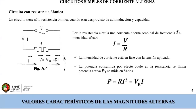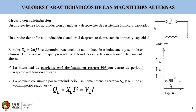Otro circuito que tenemos es el de autoinducción. Un circuito tiene solo autoinducción cuando está desprovisto de resistencia ómica y capacidad. La intensidad va a estar desfasada del voltaje 90 grados. Su ecuación característica de reactancia inductiva va a ser igual a 2 pi por la frecuencia por inductancia, se denomina reactancia de autoinducción o inductancia y se mide en ohmios. La potencia consumida por la autoinducción se llama potencia reactiva, denotada por Q sub L, igual a X sub L por intensidad cuadrada o voltaje inductivo por intensidad.